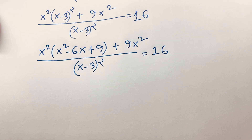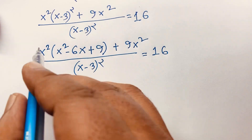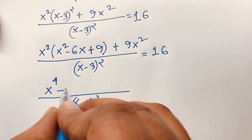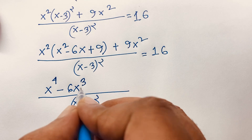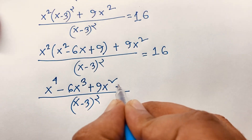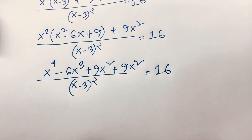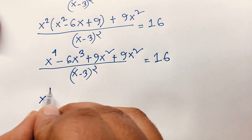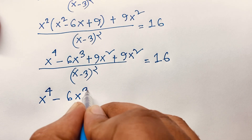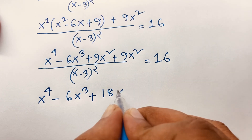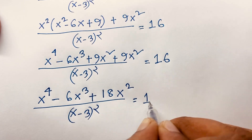Now let's solve this step by step. Expanding (x - 3)² times x² gives x⁴ minus 6x³. Here x² times x gives 6x³, and then 9x² plus 9x² equals 18x² over (x - 3)² is equal to 16.